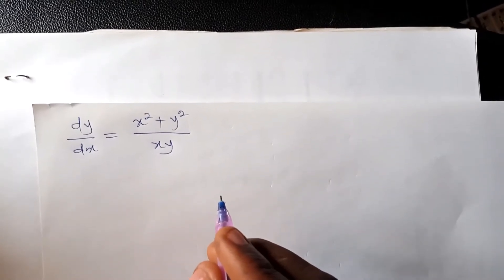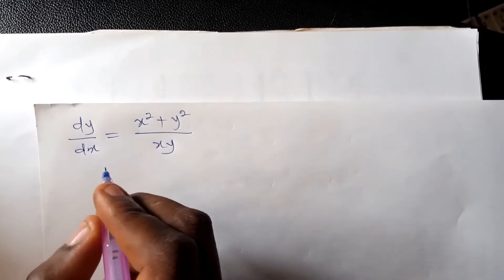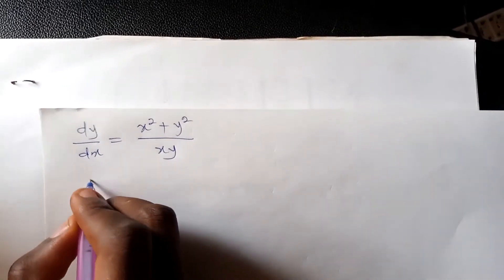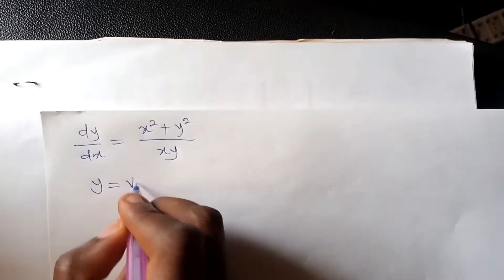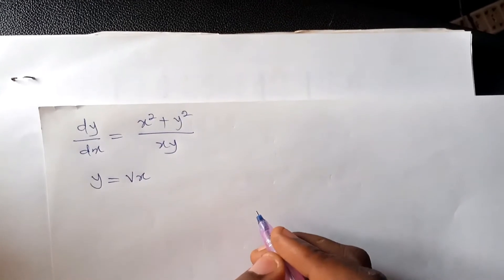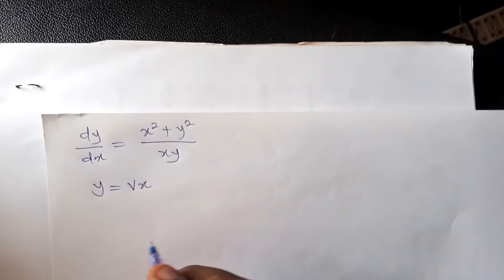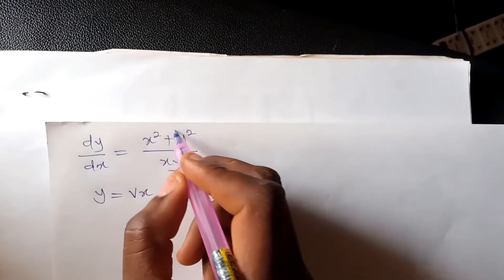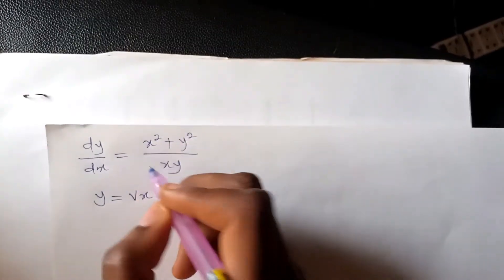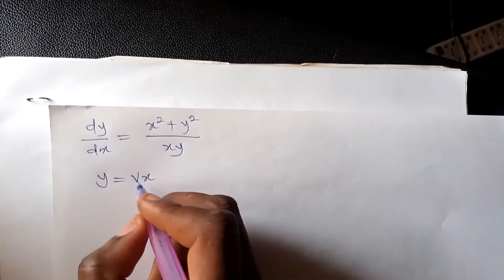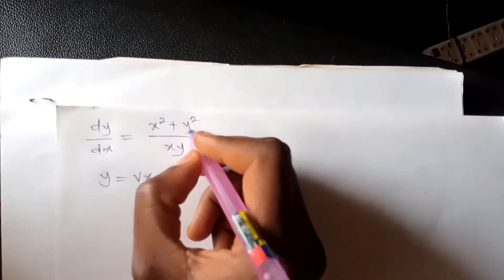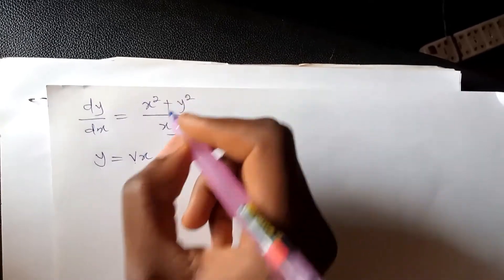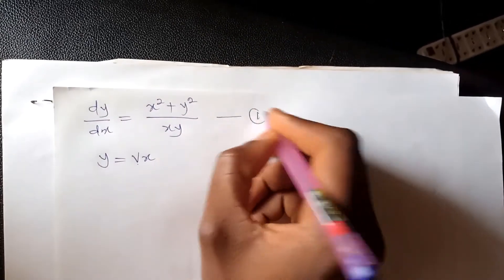We want to solve this problem using the third method called the method of homogeneous equations. What is special about this method is that we assume y equals vx. We use this method when we can see clearly that in f(x, y) we cannot separate the variables — that's condition one. Condition two: if we substitute y equals v of x, then one of the variables will definitely disappear.